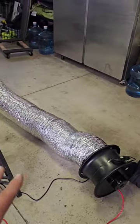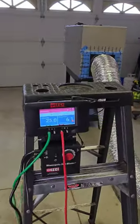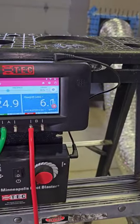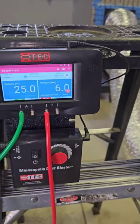Currently doing a duct blaster test, pressurizing my brand new air handler that I'm about to install in my house. It's running right at 5.9 to 6 CFMs of leakage at 25 pascals.